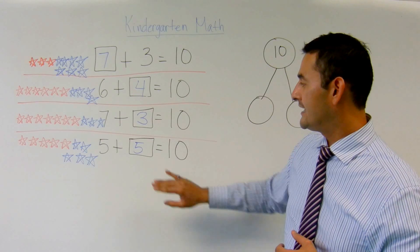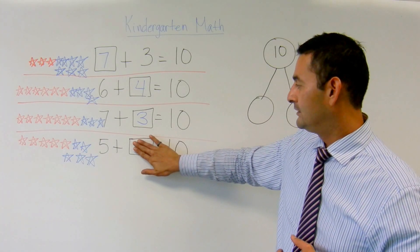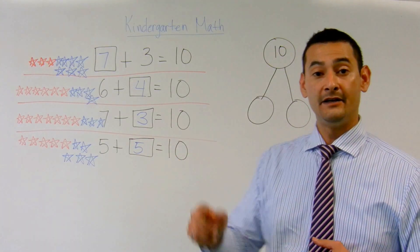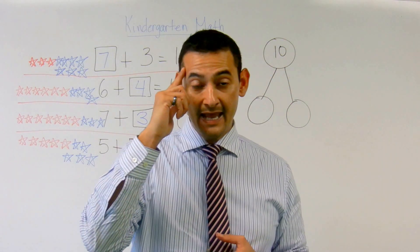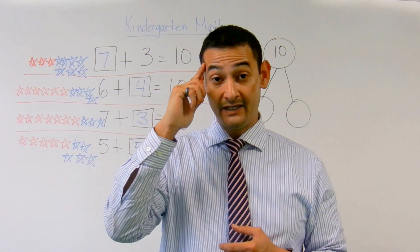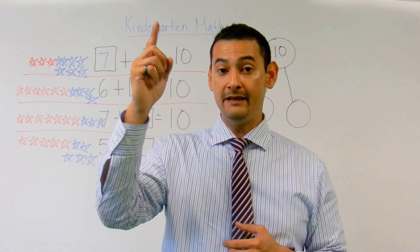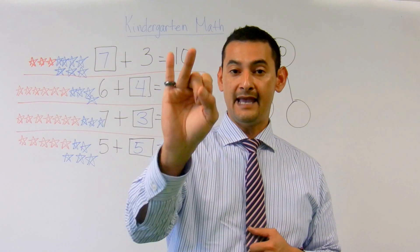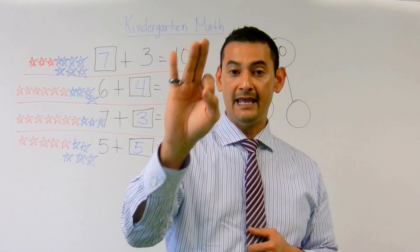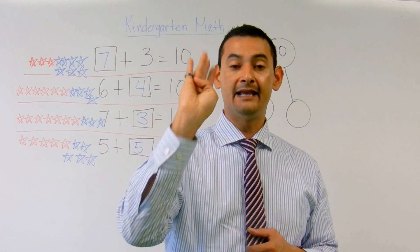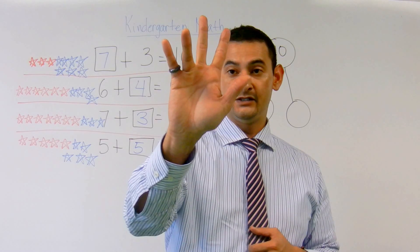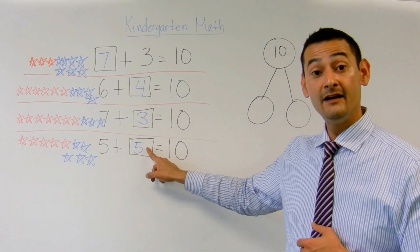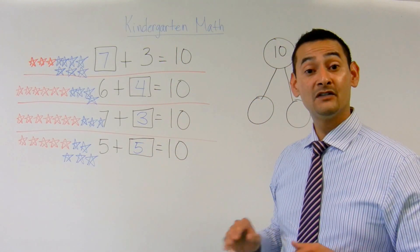And now let's take a look at the last one. 5 plus something equals 10. I'm going to put 5 in my head and count up to 10. Ready? 5, what's next? 6, 7, 8, 9, 10. How many do I have? 1, 2, 3, 4, 5. Is that a 5? Absolutely.